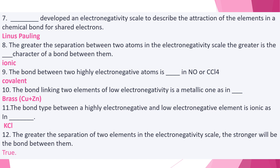Number eight: the greater the separation between two atoms in the electronegativity scale, the greater is the ionic character of a bond between them. This could come up as a true or false question, or you may be asked to fill in a word that fits the question.